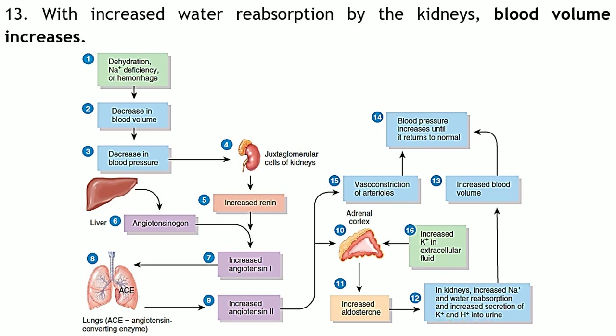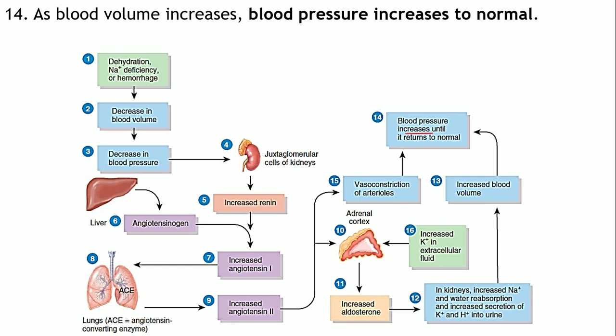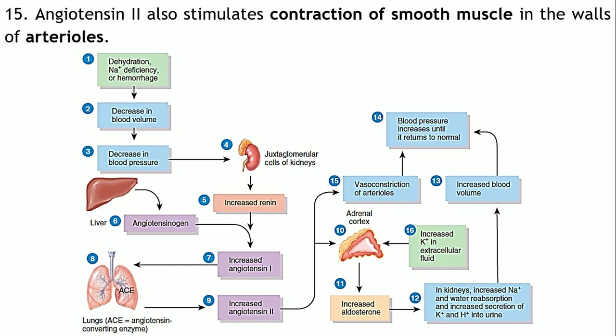Due to increased sodium and water reabsorption, blood volume increases, which in turn raises blood pressure back to normal. Additionally, angiotensin 2 directly causes vasoconstriction of the arterioles, further increasing blood pressure. When any hormone causes vasoconstriction, the diameter of blood vessels decreases, resulting in a rise in blood pressure.